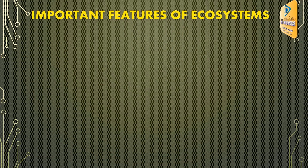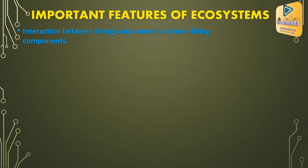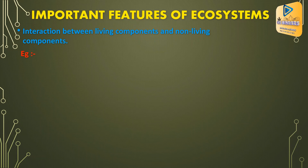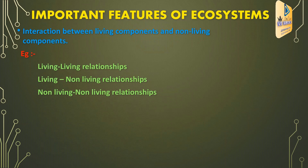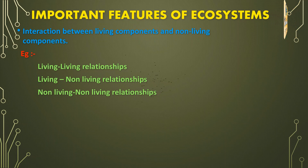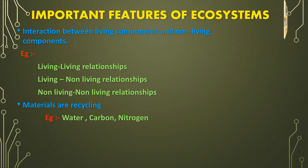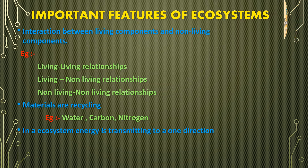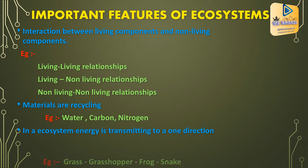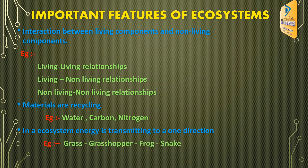Important features of ecosystems: interaction between living components and non-living components. Examples are living-living relationships and non-living-living relationships. Materials are recycled — examples are water, carbon, and nitrogen. In an ecosystem, energy is transmitted in one direction: grass to grasshopper, grasshopper to frog, frog to snake.